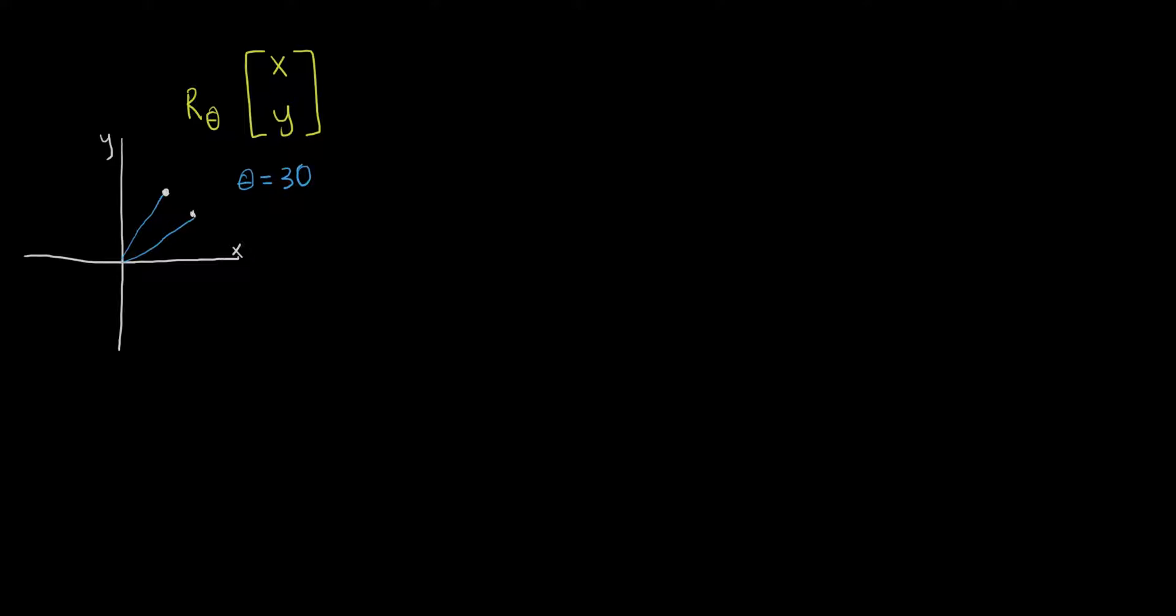So the rotation matrix, R theta, is the cosine of theta and the sine of theta as the first column, and then the negative sine of theta and the cosine of theta as the second column.